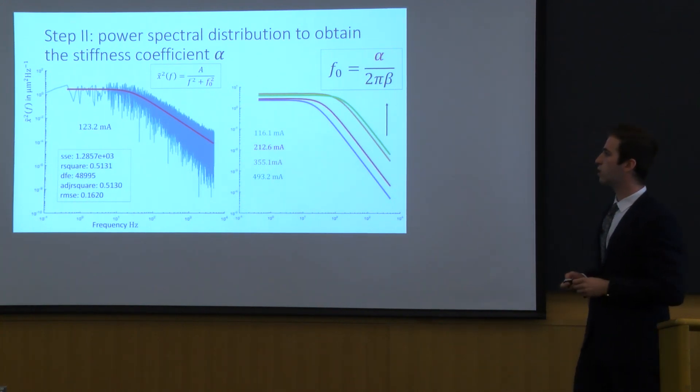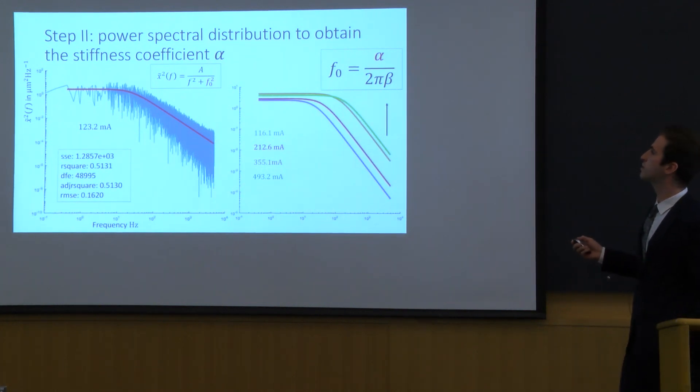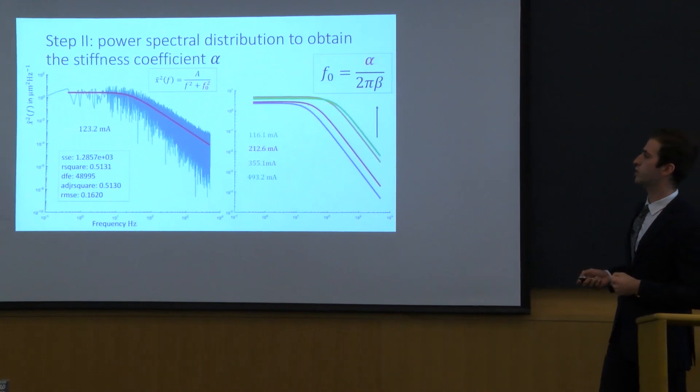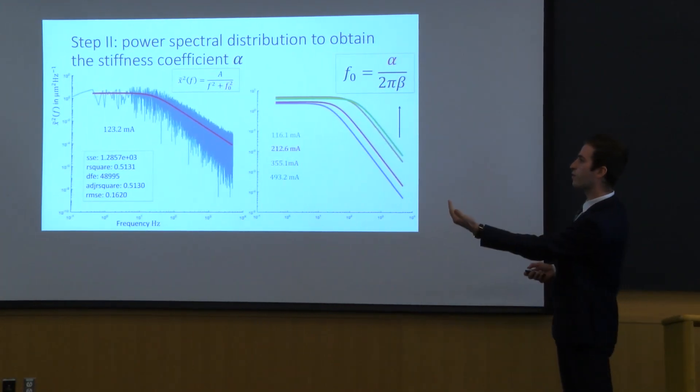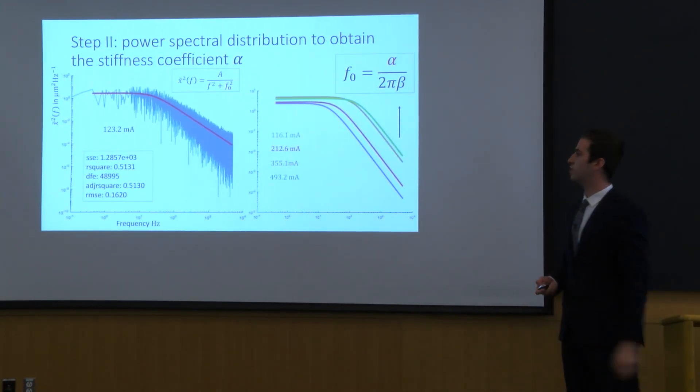This is a log log plot as you can see here. Another thing I would like to mention is look at the proportionality here. As we increase the power we also increase the stiffness coefficient alpha because we trap more closely. So it means that F0 has to increase and indeed when we increase the power we are shifting F0 to the right.